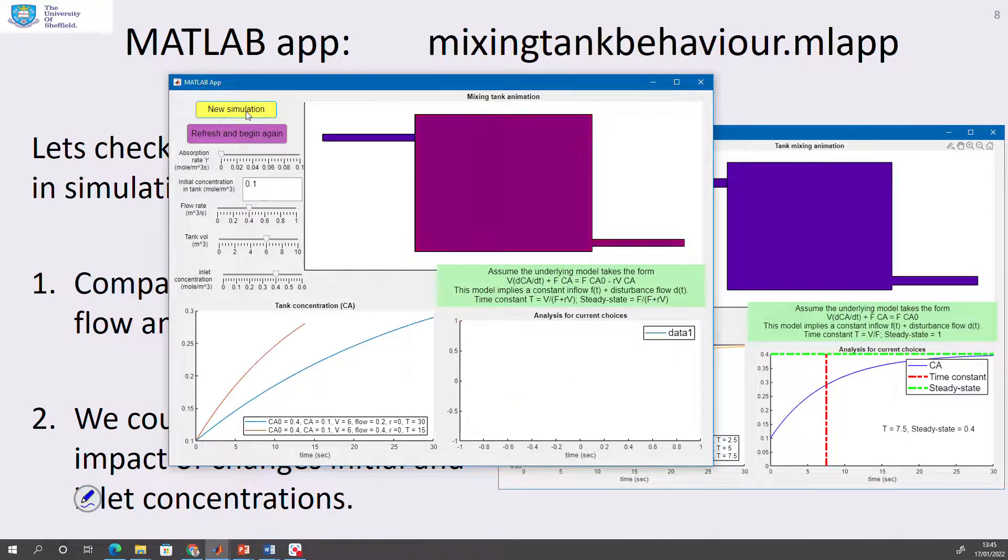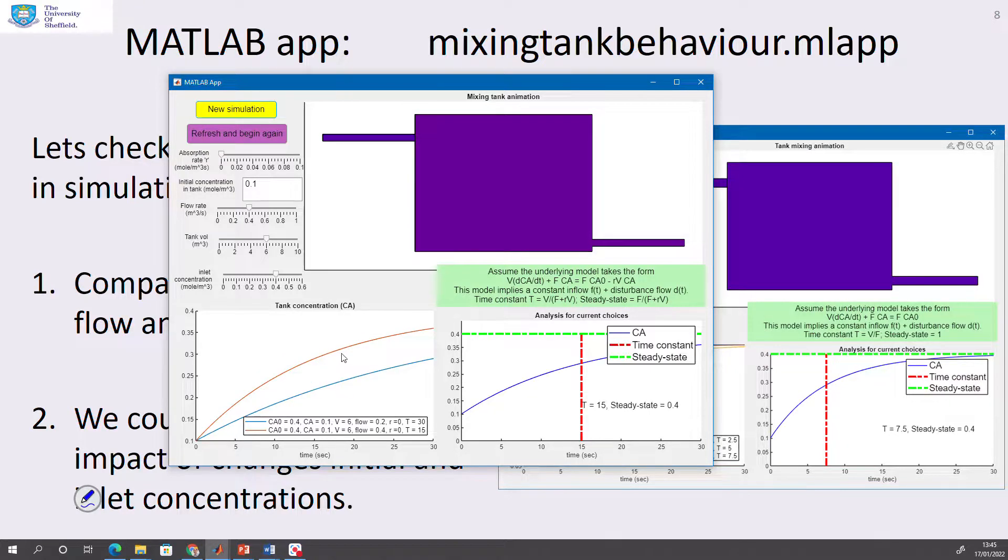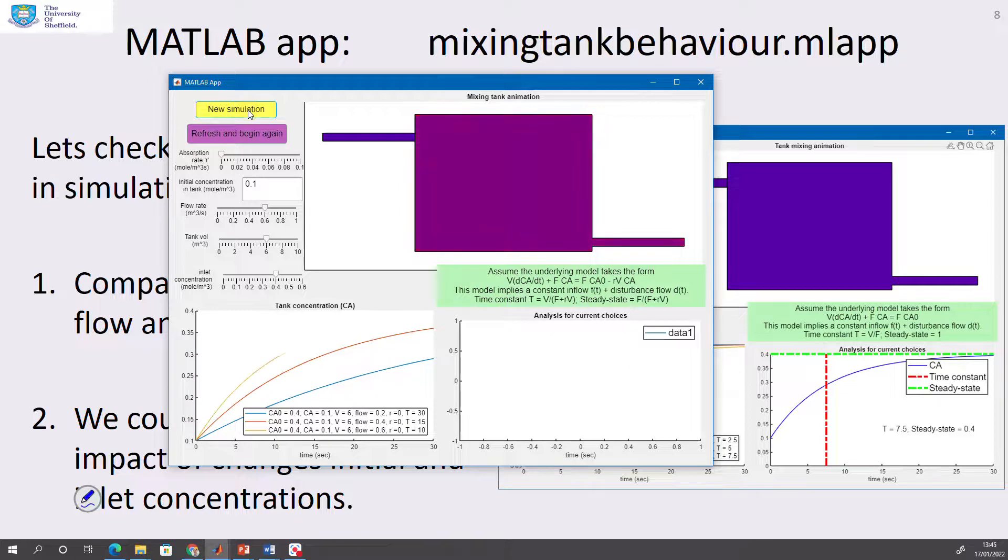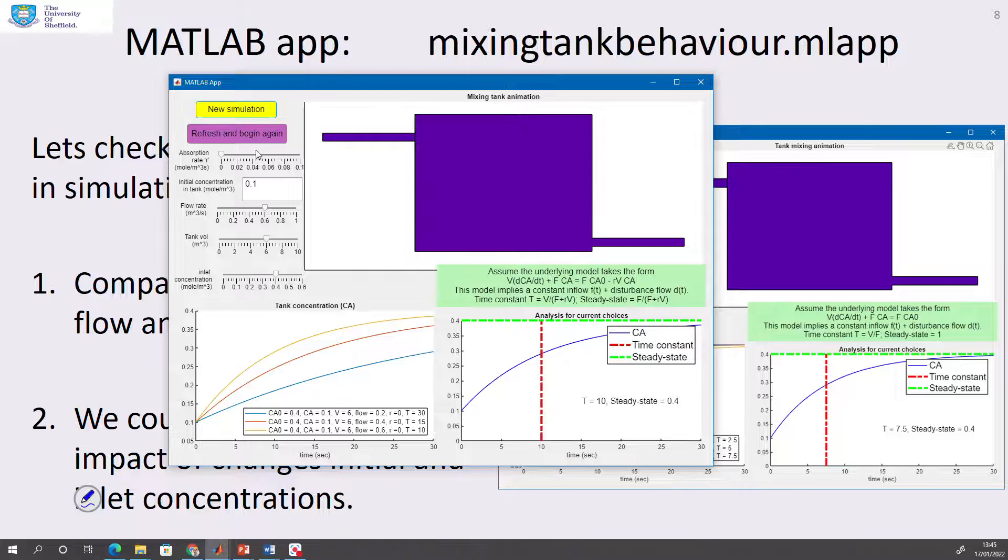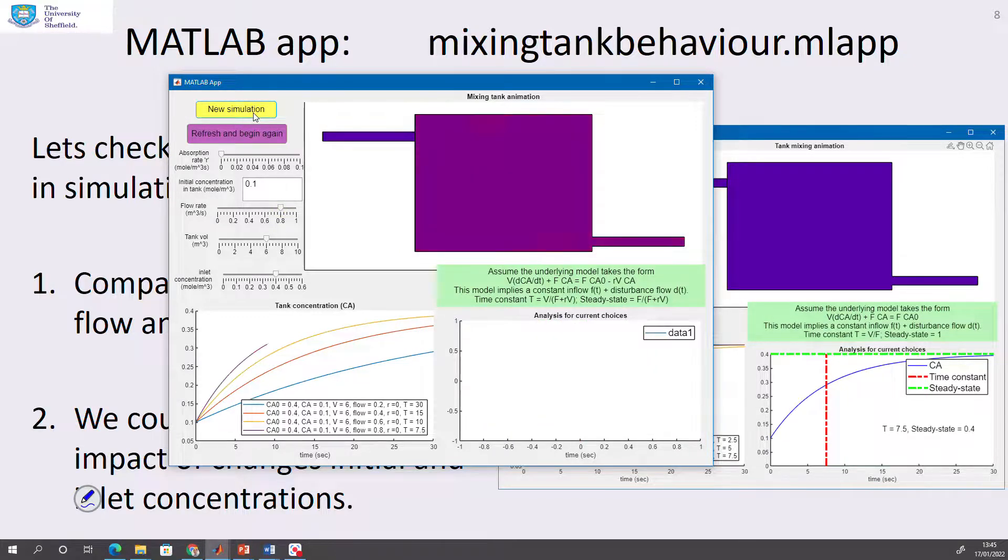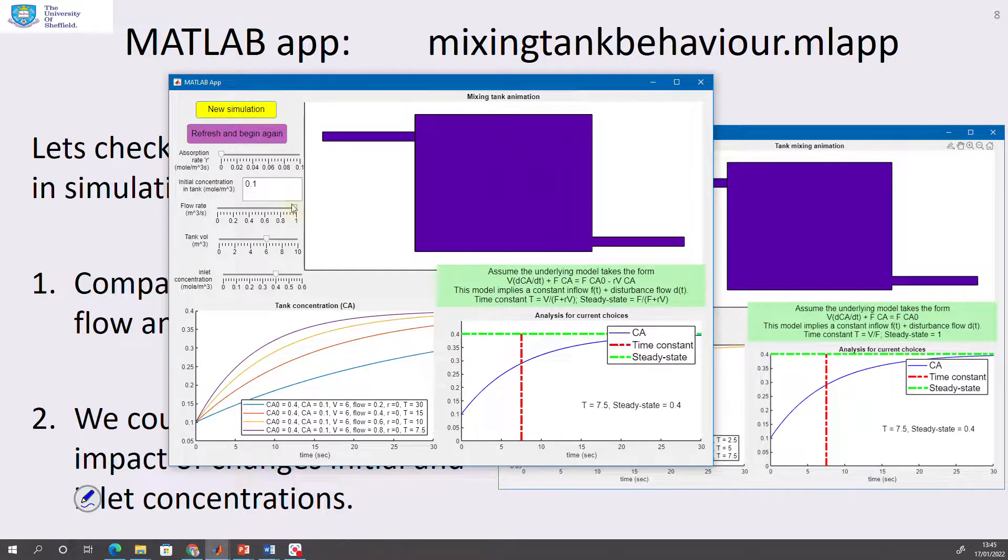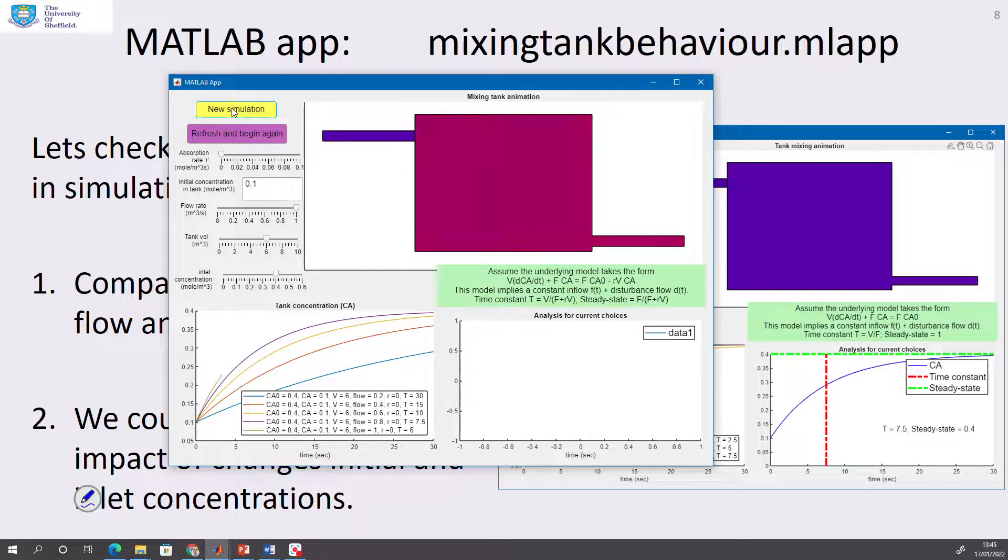So as I've increased the flow rate, what can you see? The time constant has got faster, but the steady state is the same. Let's get the flow rate up to 0.6. The time constant is getting faster, but the steady state is not changing. Flow rate up to 0.8. The time constant is getting faster, the steady state is the same. And finally, we could take the flow rate up to one and you will see the same impact.